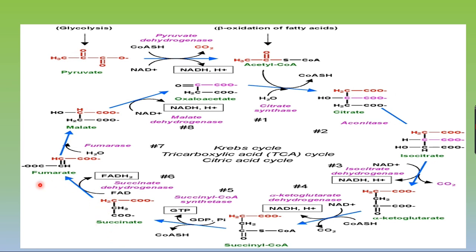Succinate undergoes dehydrogenation (oxidation) to form fumarate. Here, FAD is the hydrogen acceptor — the hydrogen atoms are accepted by flavin adenine dinucleotide to form FADH₂. One FADH₂ yields two ATP molecules, compared to three ATP from one NADH. The enzyme is succinate dehydrogenase.